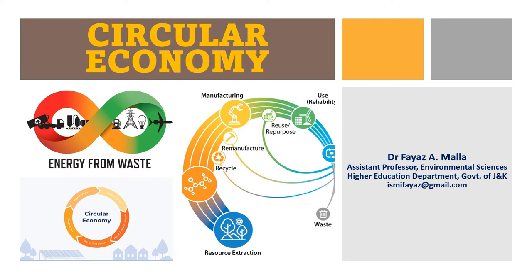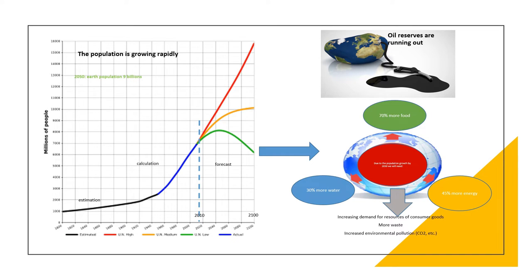Welcome dear learners, today we are going to discuss the circular economy. As we know, there are various kinds of pressures that the human race is facing nowadays, and many more pressures will come in the future. Human development is mostly dependent on fossil fuels — whether coal, petroleum, or natural gas. Industries, vehicles, household and commercial setups all run on fossil fuels, whether LPG, coal for power generation, or fossil fuels for vehicles.